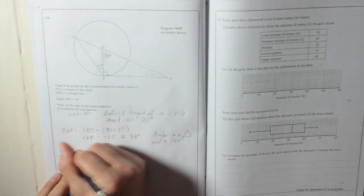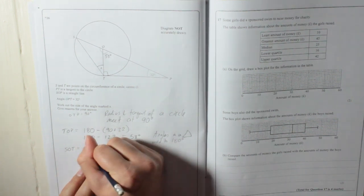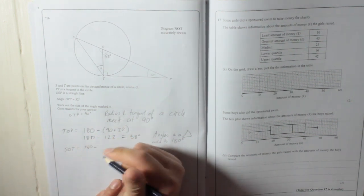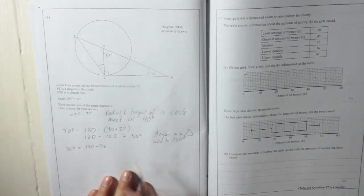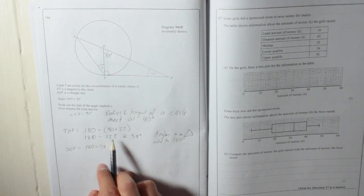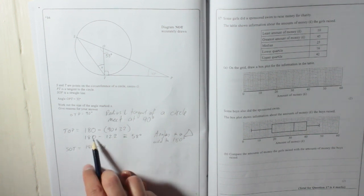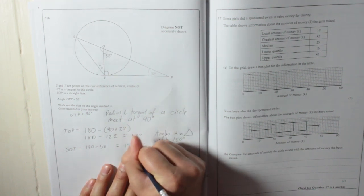S-O-T is equal to 180 take away 58. Well, that's actually going to be 122 again, because 180 take away 122 is 58. So 180 take away 58 must be 122 degrees.